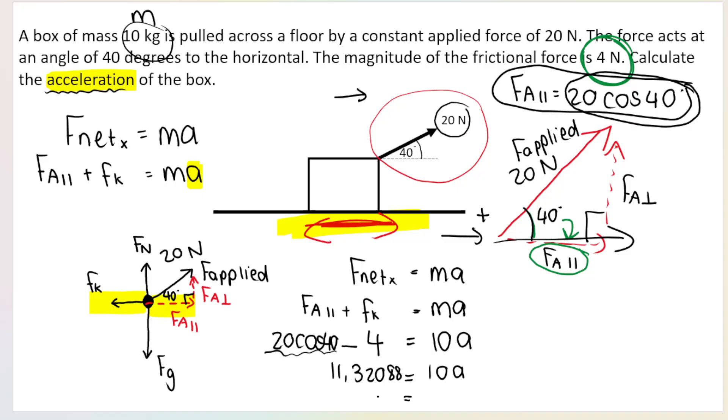Then how do I get acceleration by itself? I say 11.320888886 divided by 10 and I get acceleration as 1.13. I'm rounding it off to two decimal places. Meters per second squared or meters per second per second to the right. Now how do I know that it's to the right? I got a positive value for acceleration and my positive direction is to the right.